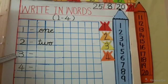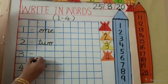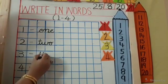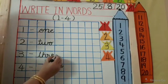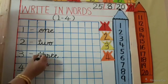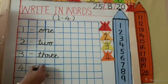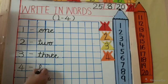Which number? Three. Write in words. T-H-R-E-E. Three. F-O-U-R. Four.